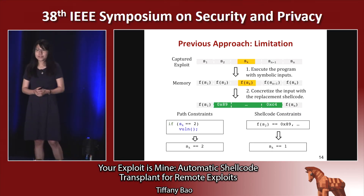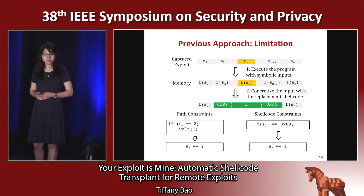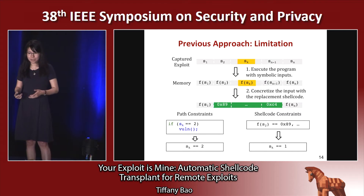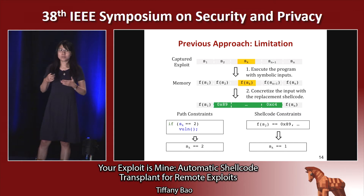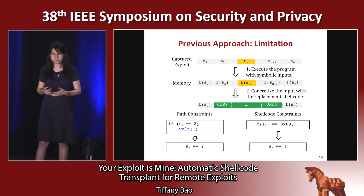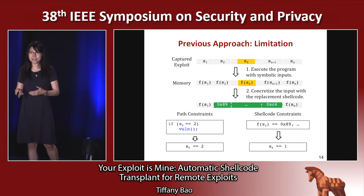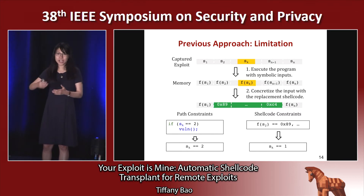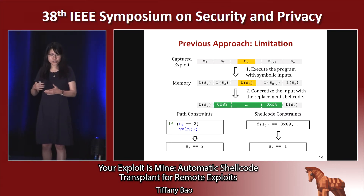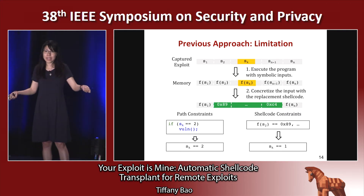However, there may not exist a satisfiable solution. For example, suppose we have a vulnerable program where only if sk equals two does it go to a vulnerable function. In this case, to trigger the vulnerability, we have to have sk equal to two. On the other hand, when we concretize the shellcode to the symbolic memory, we may have some constraints saying sk has to be equal to one. These two constraints are contradictory.